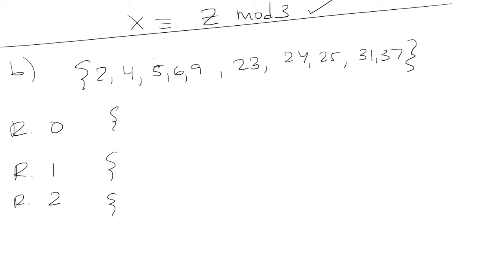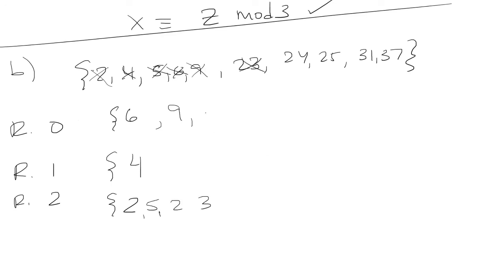Starting with 2: 2 divided by 3 is 0 remainder 2. Then 4 divided by 3 is 1 remainder 1. Then 5 divided by 3 is 1 remainder 2. Then 6 divided by 3 is 2 remainder 0. Then 9 divided by 3 is 3 remainder 0. Then 23 divided by 3 is 7 remainder 2. Then 24 divided by 3 is 8 remainder 0. Then 25 divided by 3 is 8 remainder 1. Then 31 divided by 3 is 10 remainder 1. And 37 divided by 3 is 12 remainder 1.